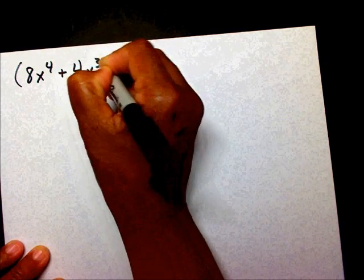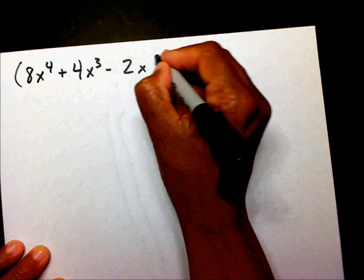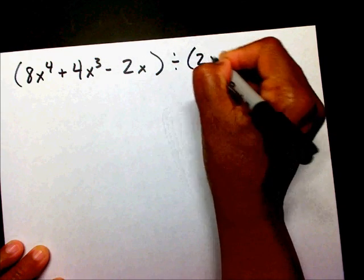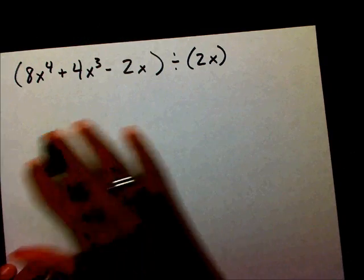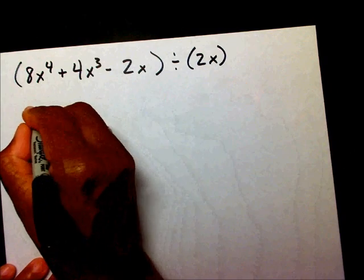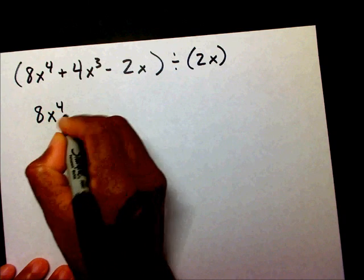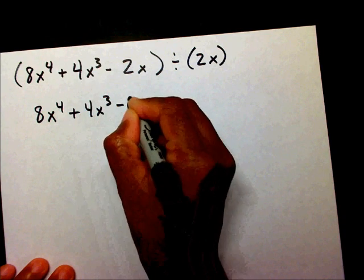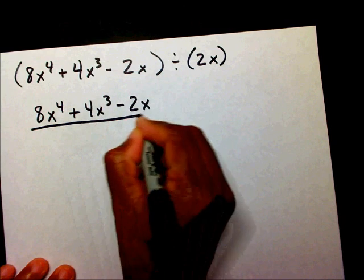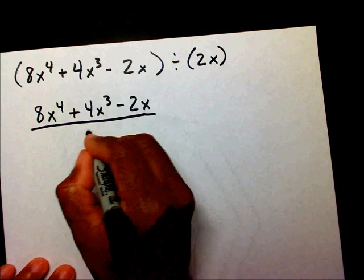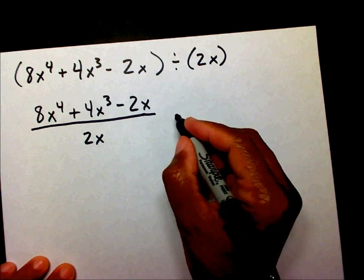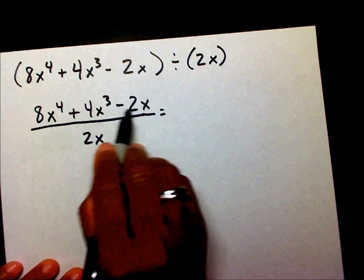Alright, let's work a different one — let's change it just slightly. I have 8x to the 4th plus 4x to the 3rd minus 2x divided by 2x. We're going to do the same thing that we did before. We're going to take 8x to the 4th plus 4x to the 3rd minus 2x — that entire trinomial — and divide it by 2x.